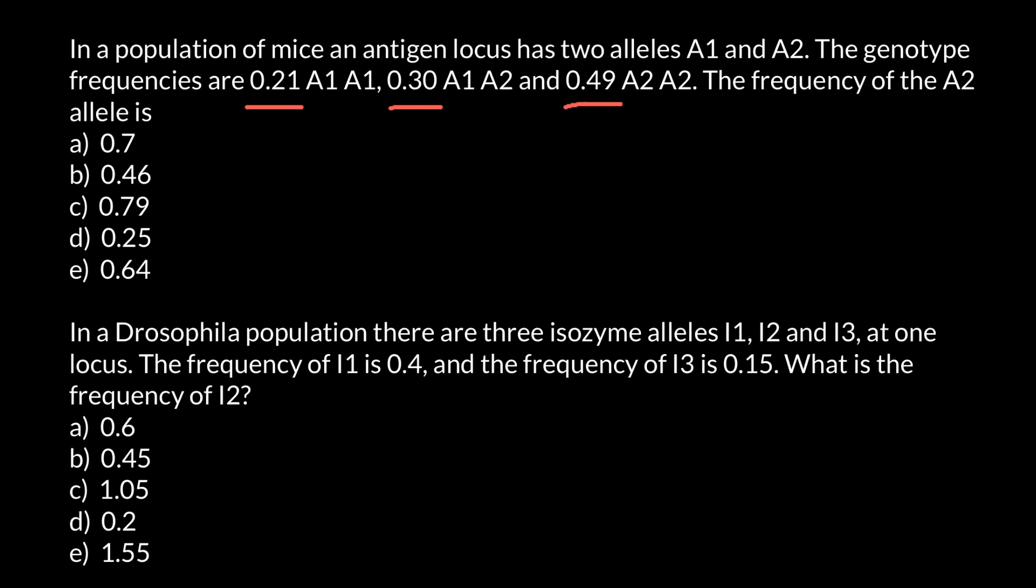We have to find the frequency of the A2 allele. Now pay attention that if we combine all these numbers, we are going to get 1. Or if you're used to doing calculations on the scale between 0 and 100%, we can say that here we have 21% frequency of this genotype, 30% frequency of the heterozygous genotype, and 49% frequency of this homozygous genotype for allele A2.